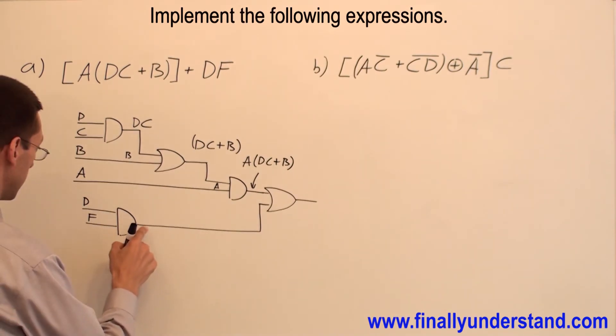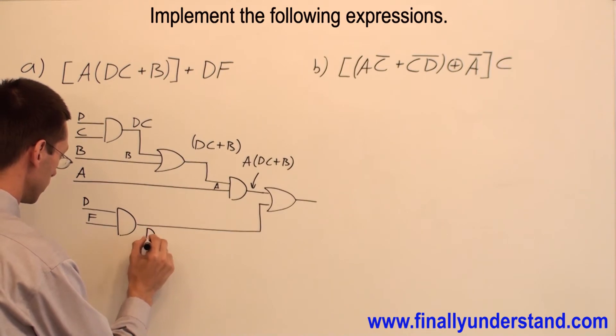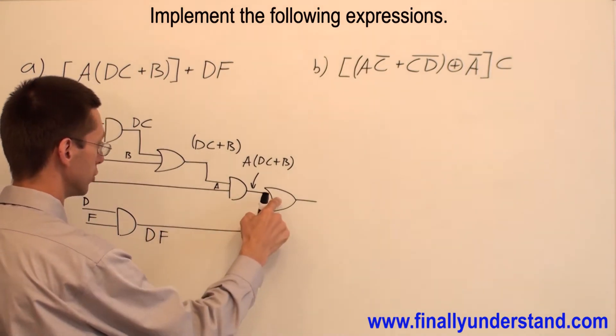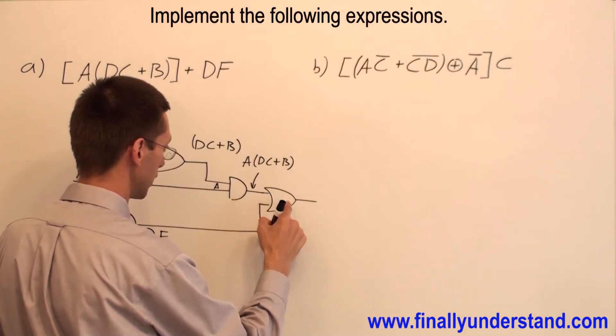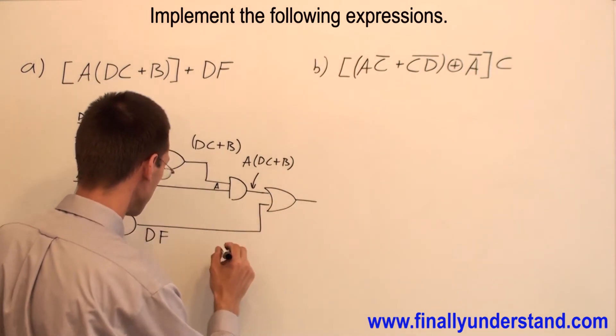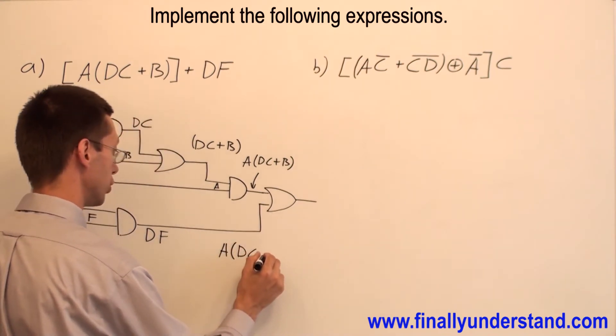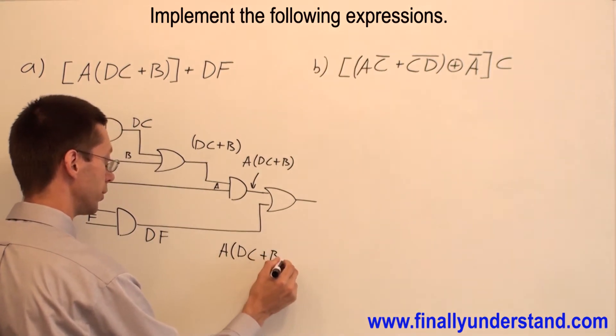Now, at the output of this gate, I'm going to have DF NAND. DF will go to the OR gate. So on the output of my circuit, I'm going to have A, open parenthesis, DC OR B.